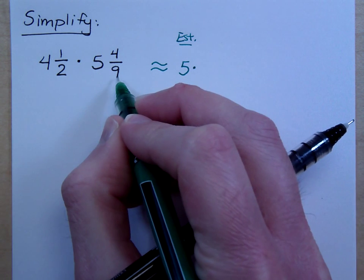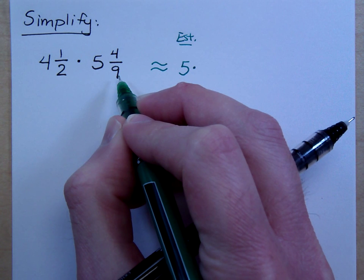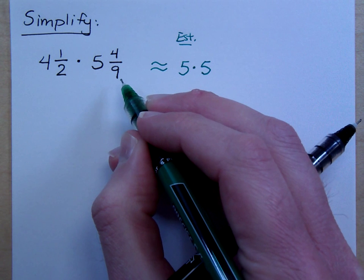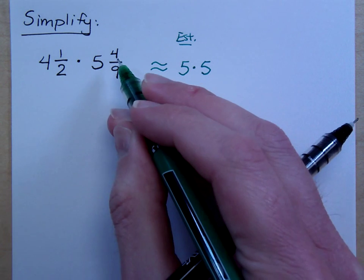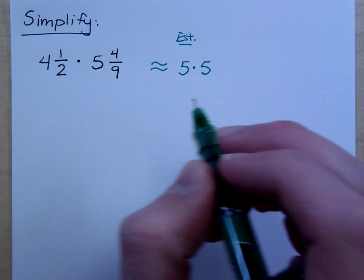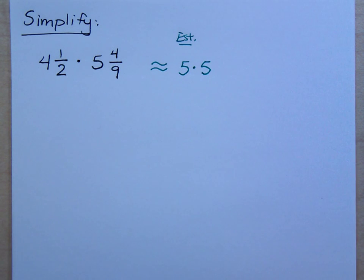And what about 5 and 4 ninths? What would that round to? Now, that would round to 5, because half of 9 is 4 and a half. And so this guy is just under 5. Or, excuse me, it's just under 4 and a half.